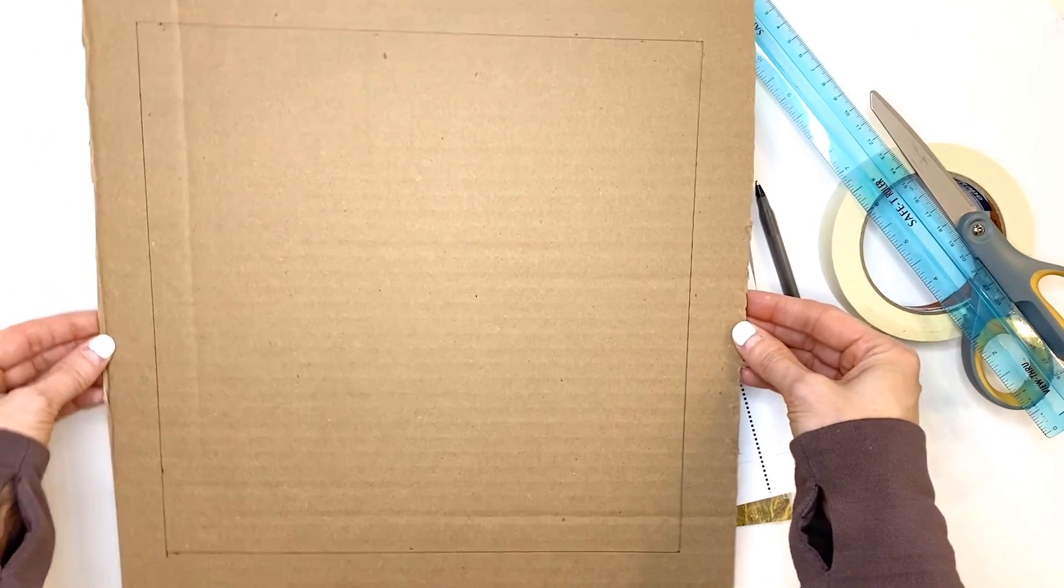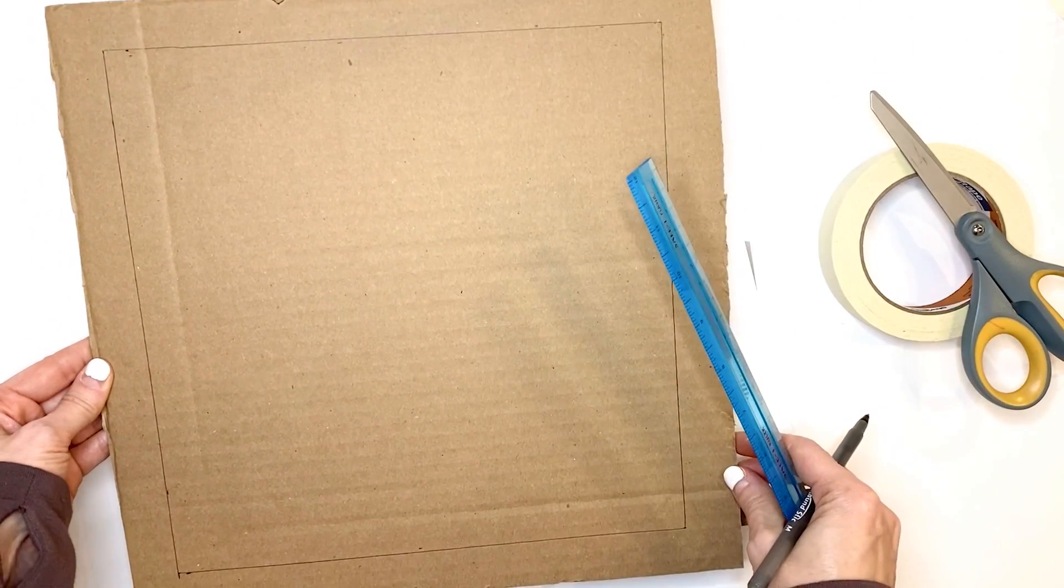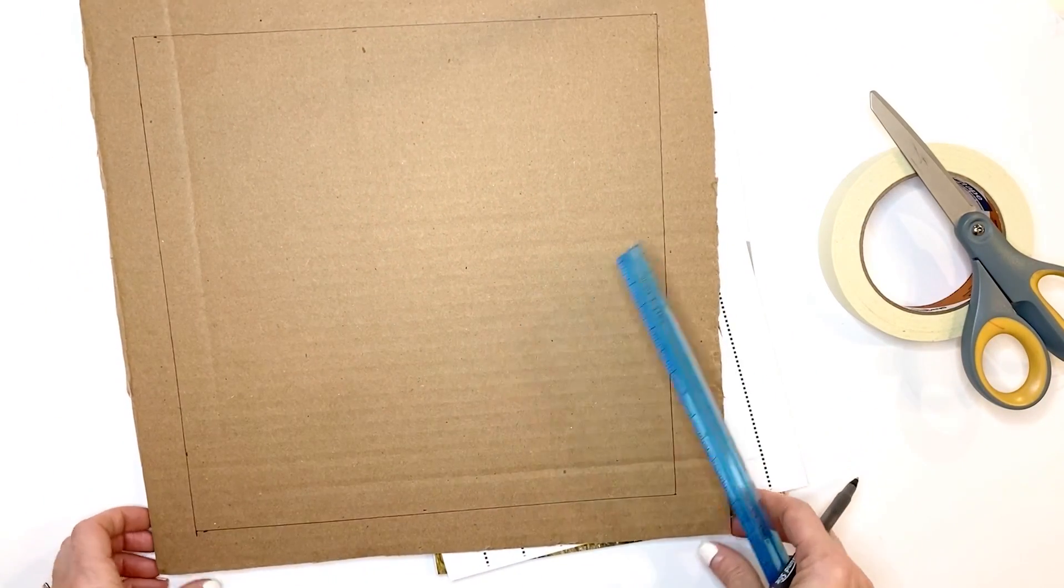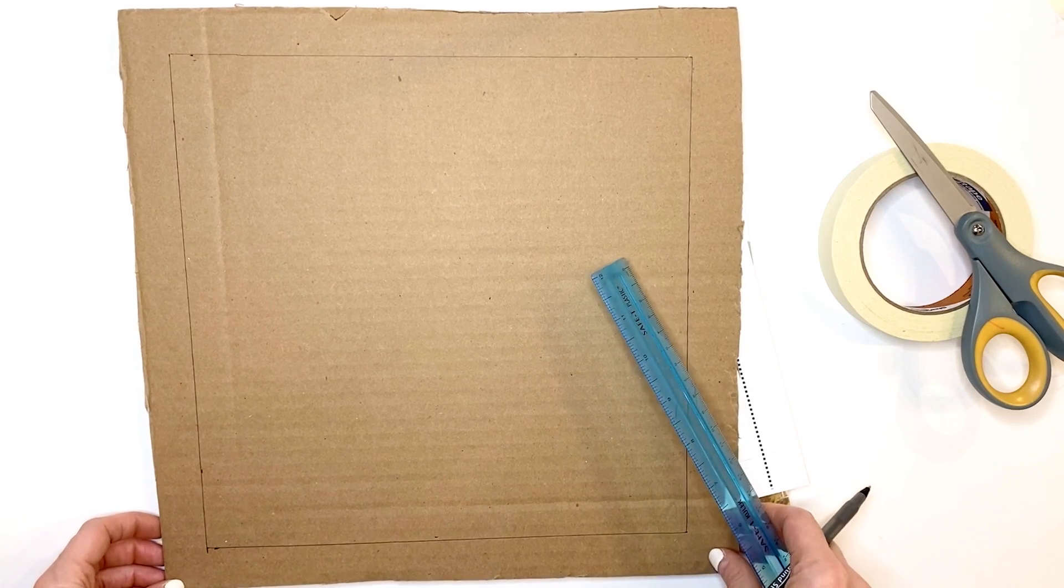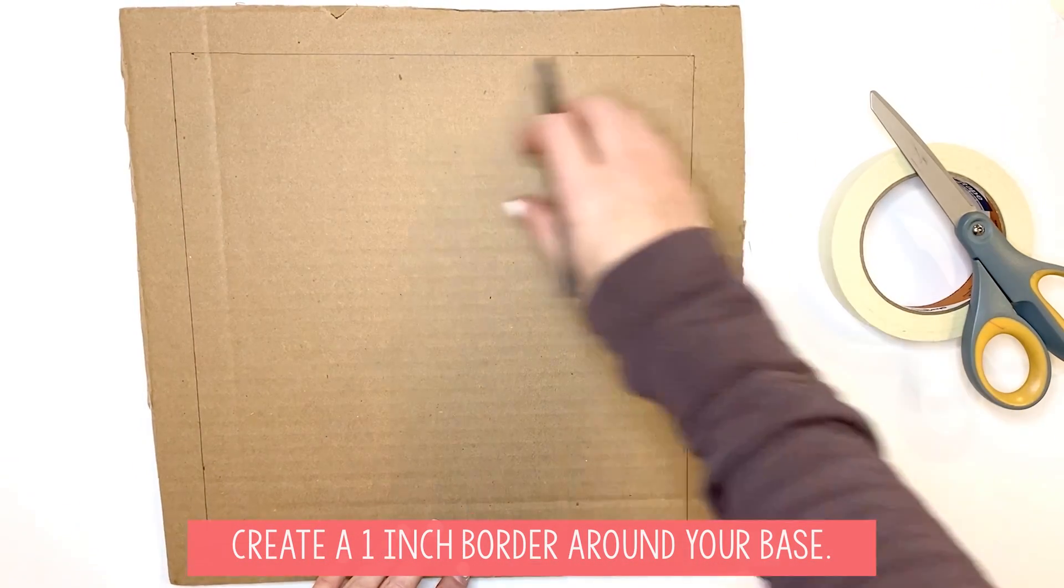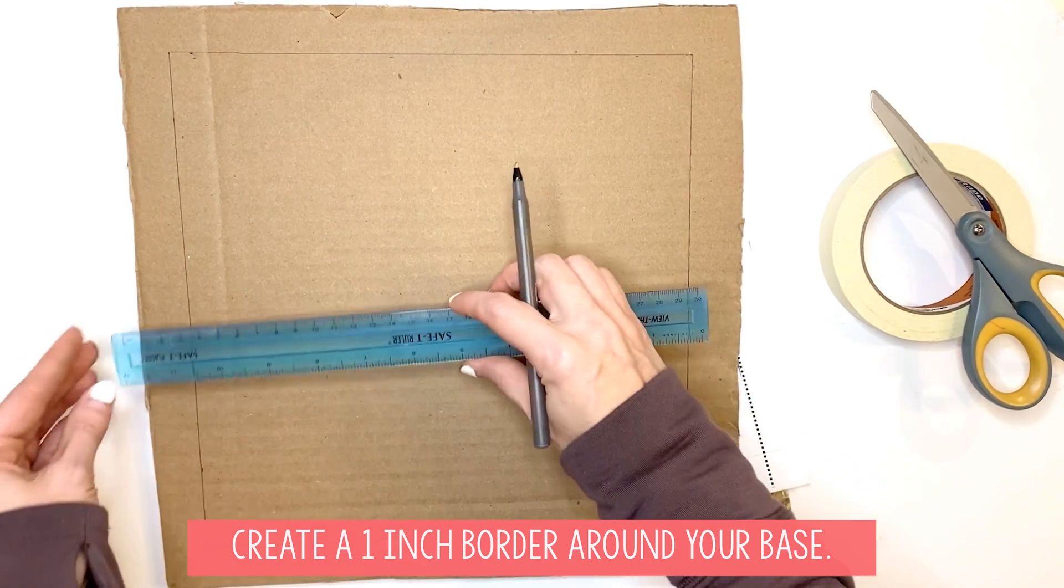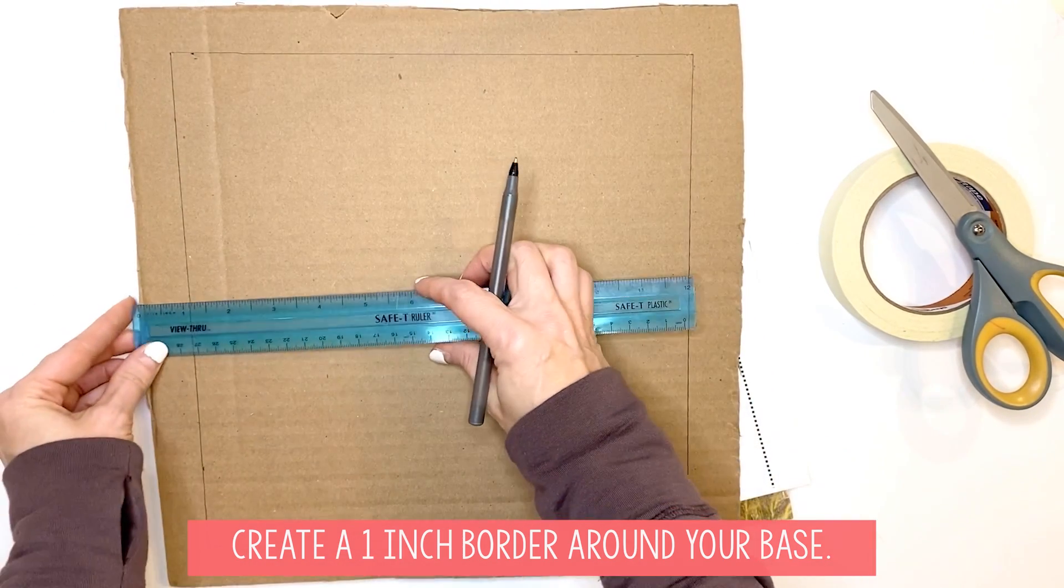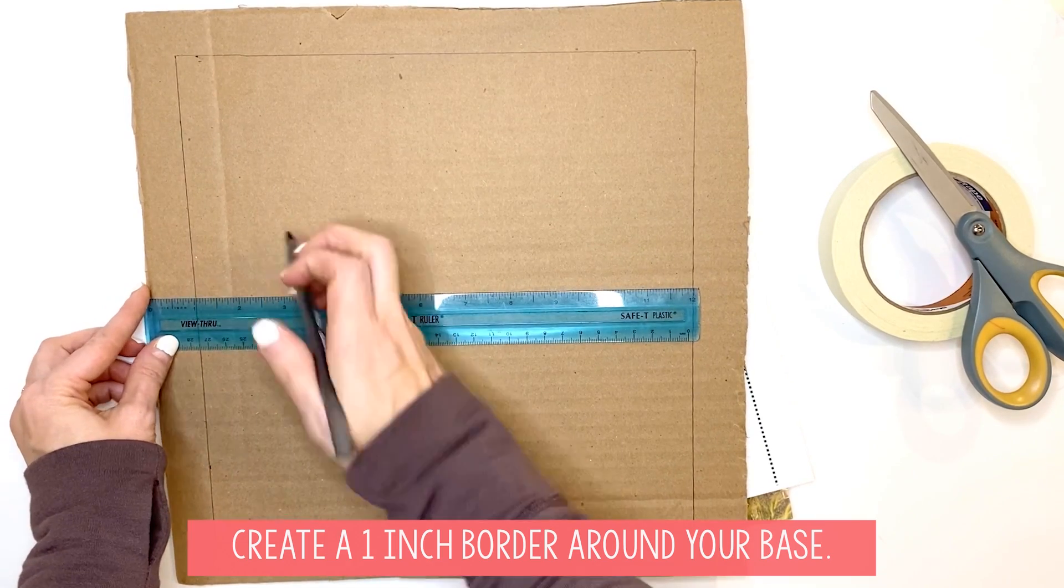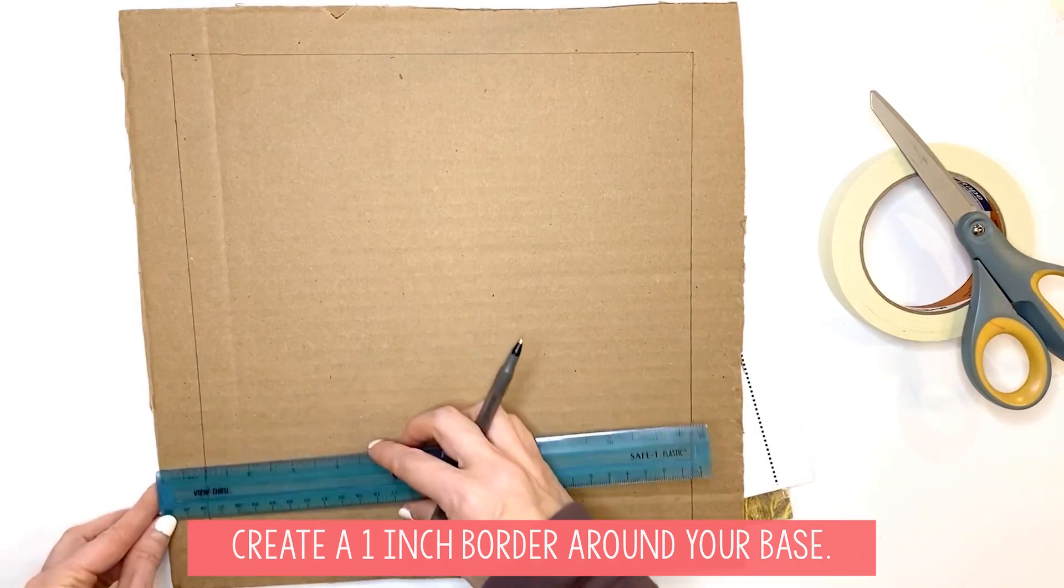Once you get your cardboard or foam board, you need to draw a border around the edges of your base that is one inch. Take a ruler and measure one inch from the edge all the way in and make some marks all the way around. Do that on all sides of your piece of cardboard—a one-inch border—and then trace them.